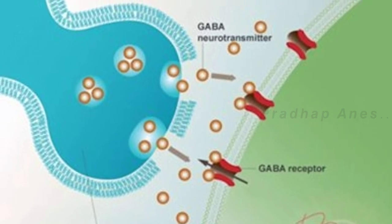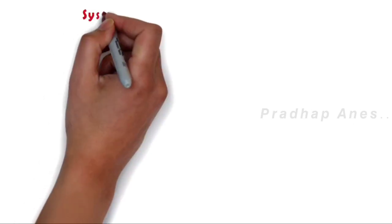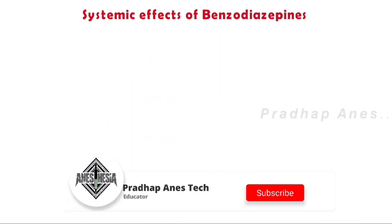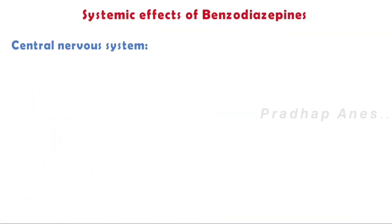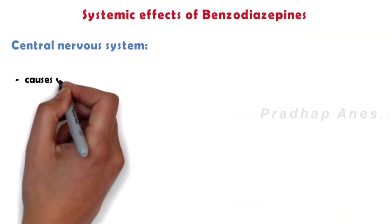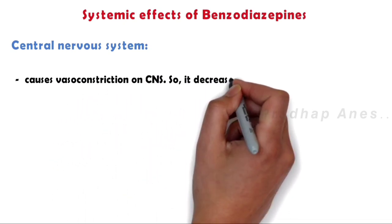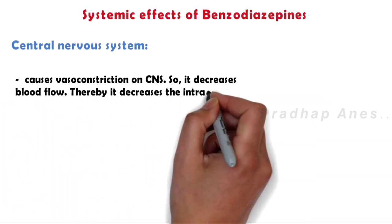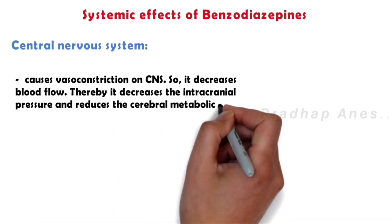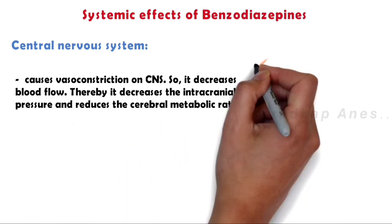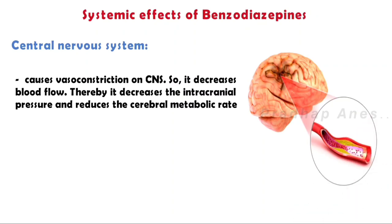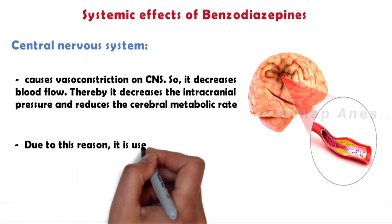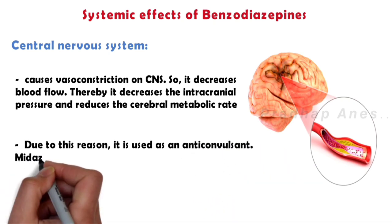Systemic effects of benzodiazepines: Central nervous system - in IV anesthetics except for ketamine, all cause CNS vasoconstriction, so it decreases blood flow thereby it decreases the intracranial pressure and reduces the cerebral metabolic rate. Due to this reason it is used as an anticonvulsant. Midazolam is the first line of drugs for convulsions.